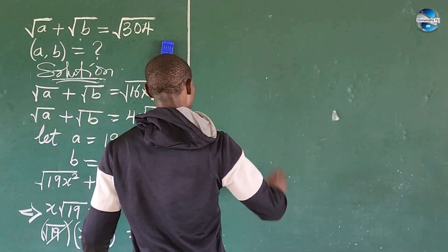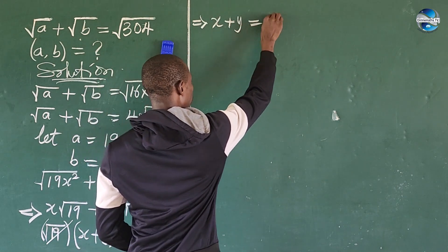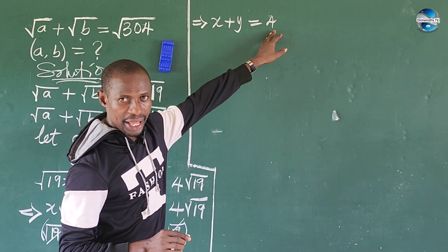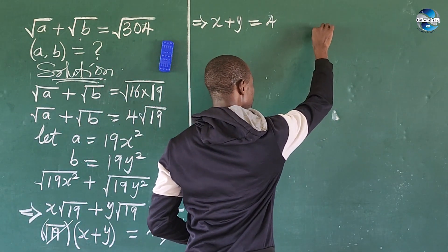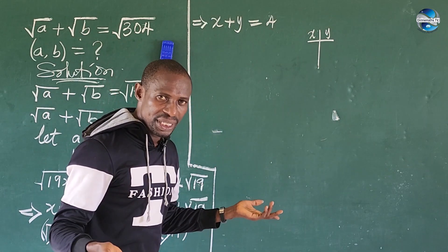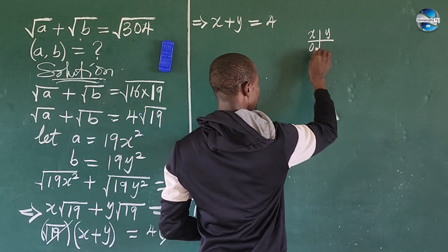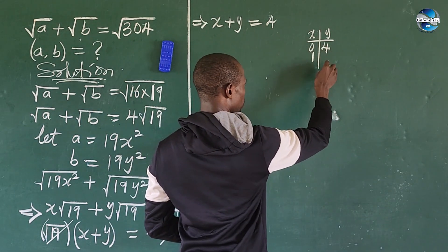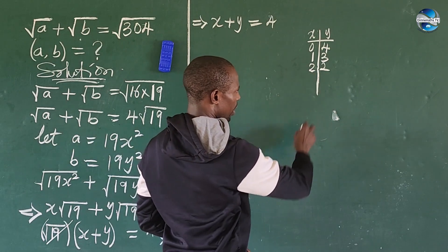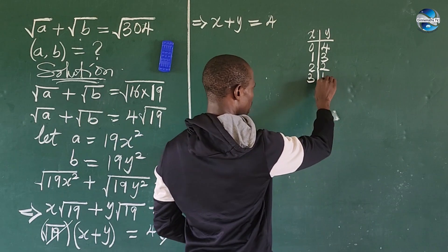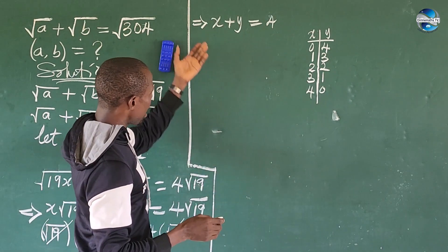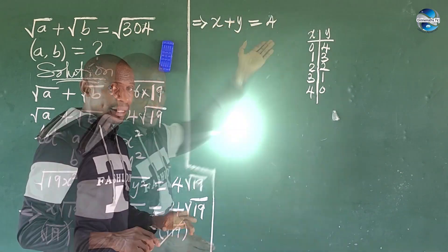So now we have x plus y equals 4. We need two numbers whose sum is 4. The possible pairs are: x = 0, y = 4; x = 1, y = 3; x = 2, y = 2; x = 3, y = 1; and x = 4, y = 0.